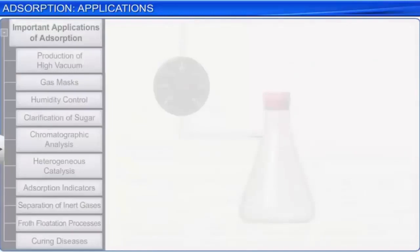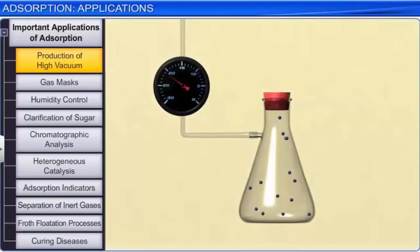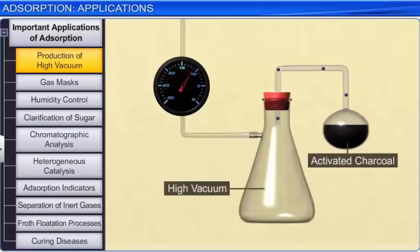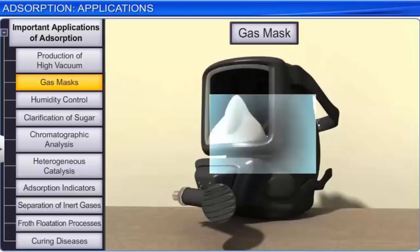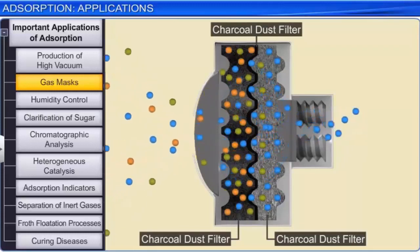A vessel that has already been evacuated by a vacuum pump may still contain traces of air. If a bulb of activated charcoal is connected to this vessel, the remaining traces of air get adsorbed by the activated charcoal, resulting in the production of a very high vacuum. Gas masks, used by miners in mines, provide protection from both particulate matter and poisonous gases based on the phenomenon of adsorption. Gas masks contain activated charcoal or a mixture of adsorbents that preferentially adsorb large volumes of poisonous gases, thereby purifying the air for breathing.